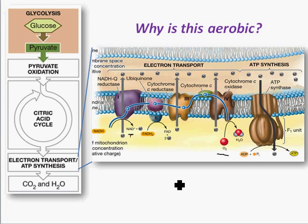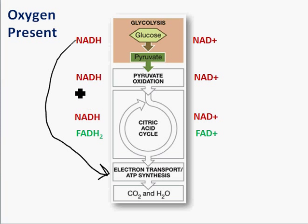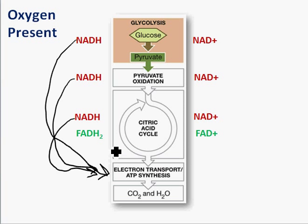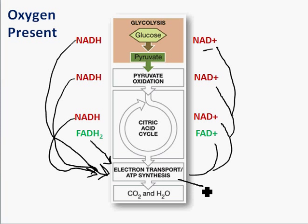These regenerated electron acceptors go back to glycolysis and the Krebs cycle to get more electrons. When oxygen is present, NADH from glycolysis, from pyruvate oxidation, and from the citric acid cycle all come to the electron transport chain and drop off their electrons. They then return to their corresponding step and grab more electrons. All these processes can occur because the electron transport chain is functioning, and it's functioning because oxygen is present.